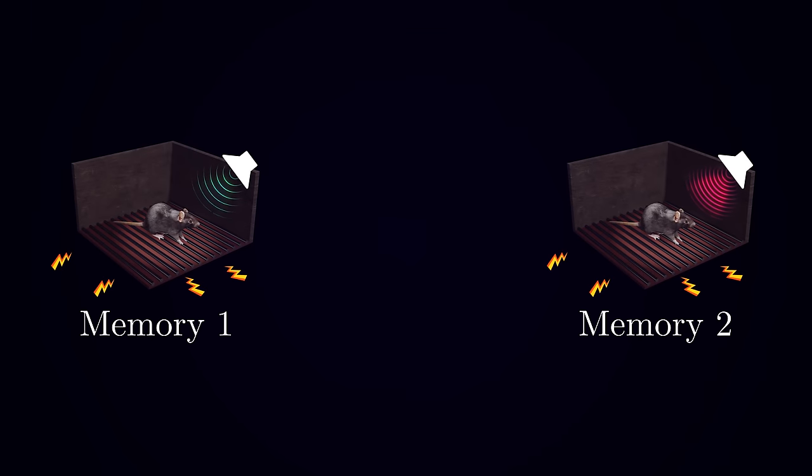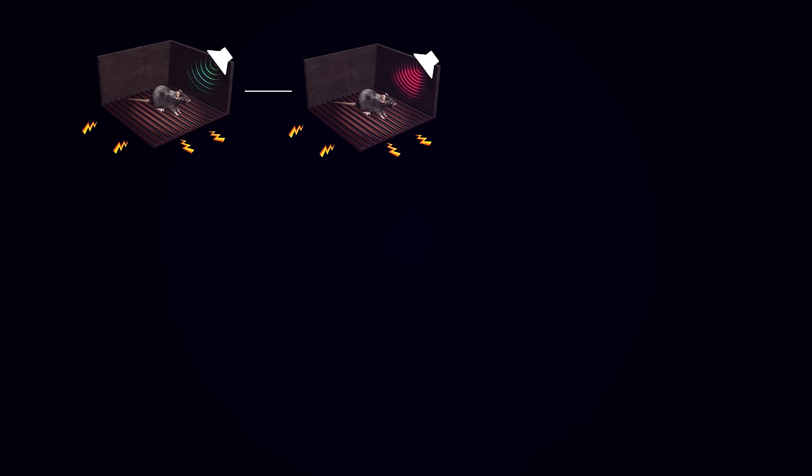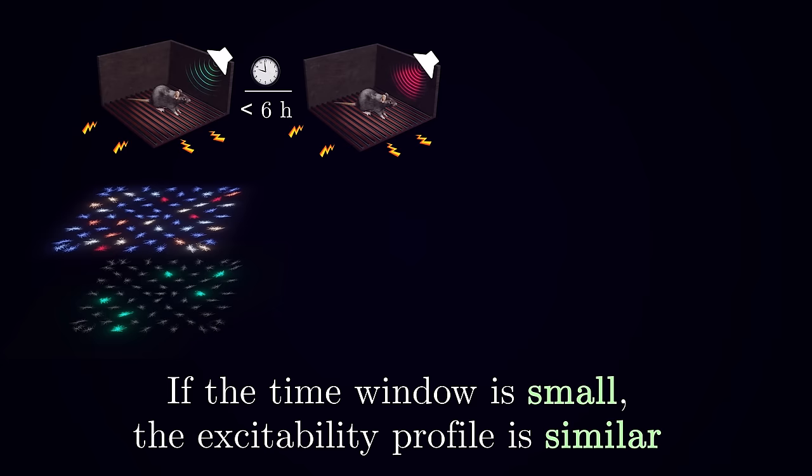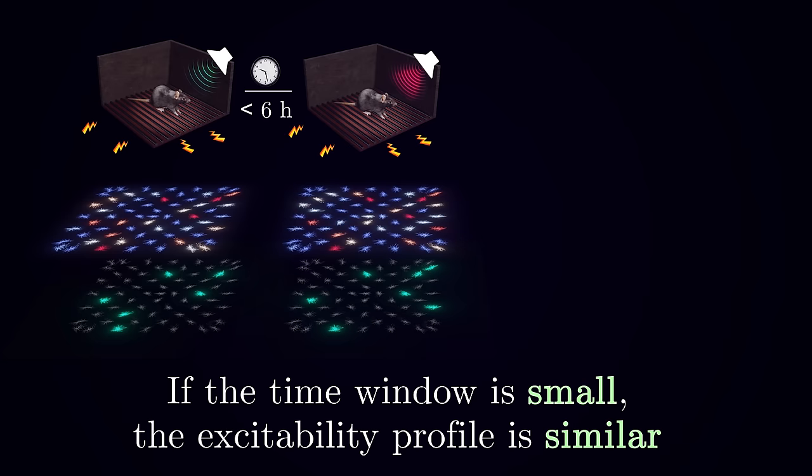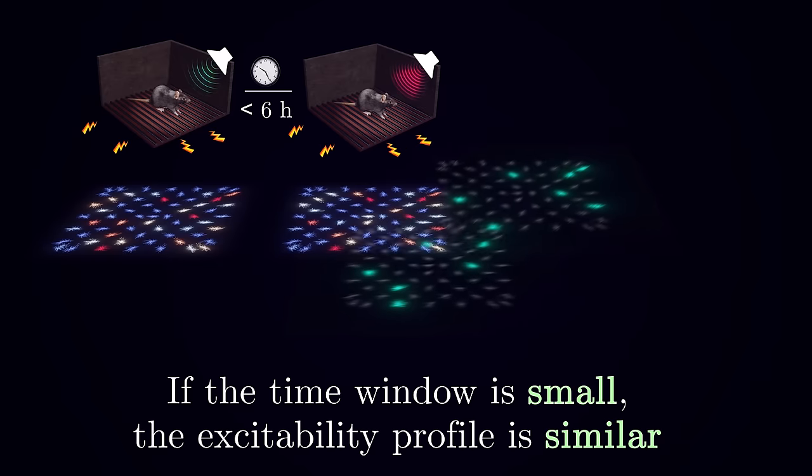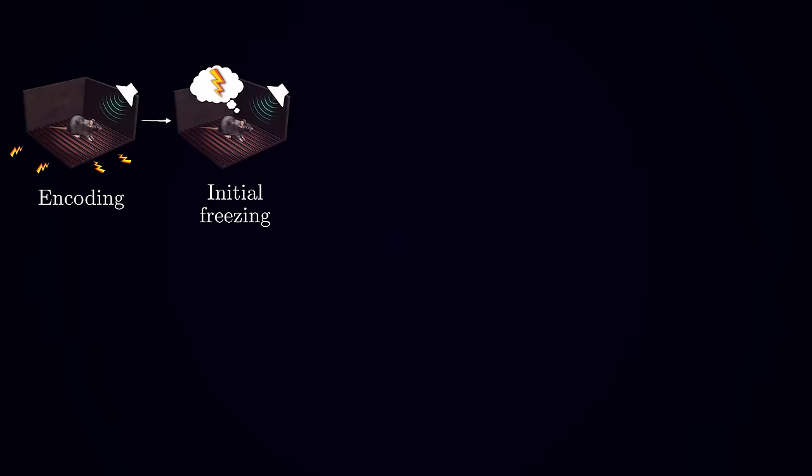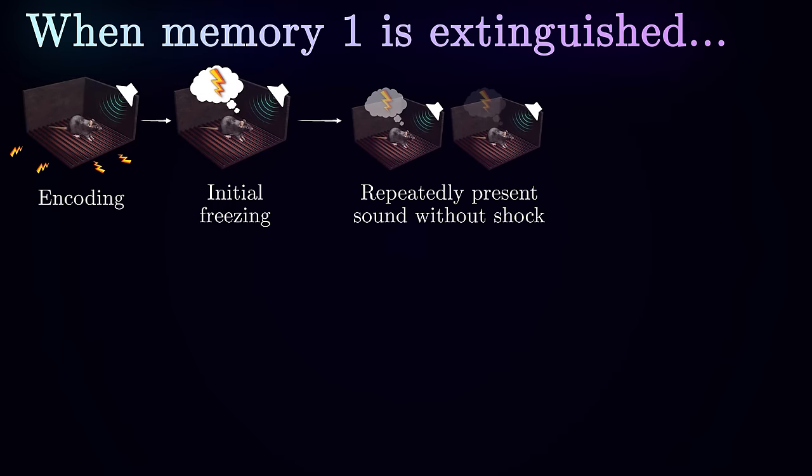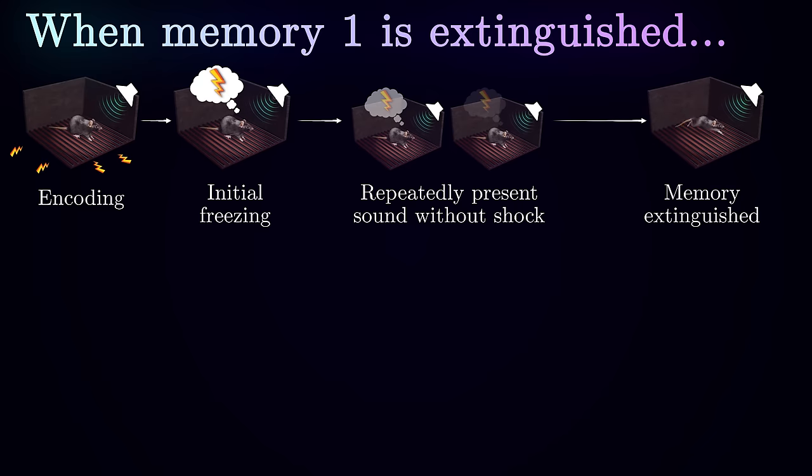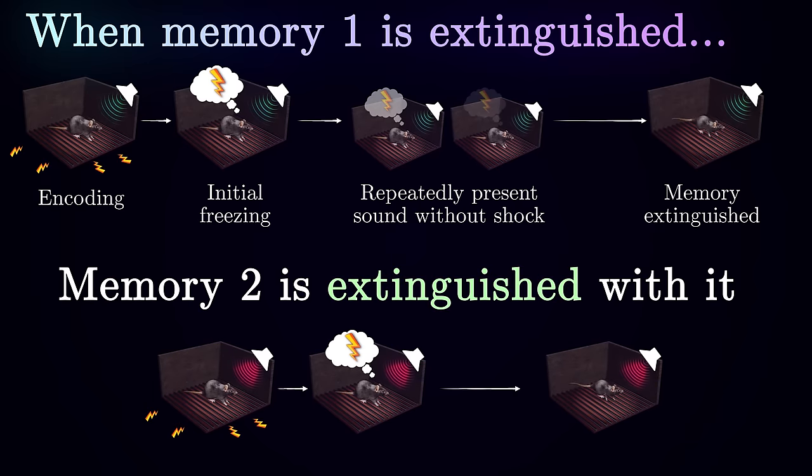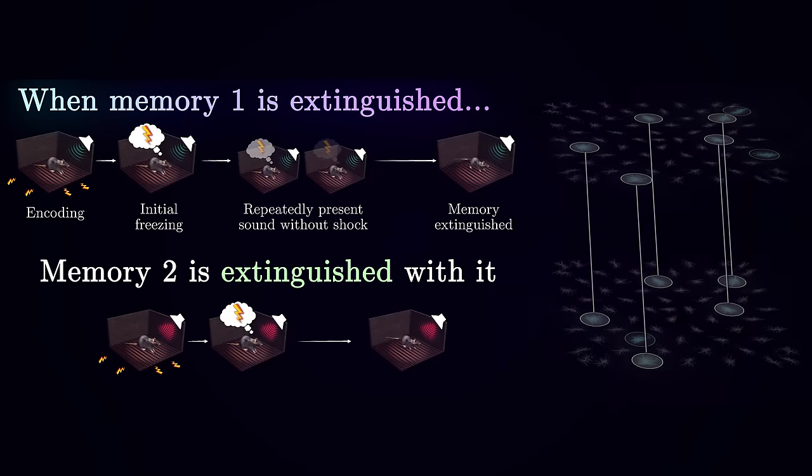For instance, consider the experiment with two different memories being associations between foot shock and two different sound tones. When the two corresponding fear conditioning sessions occur closely in time, with less than six hours in between, neurons that were most excitable during the allocation of the first memory several hours later still retain their elevated levels of excitability, and a large portion of them can outcompete the rest of the population during the allocation of the second experience. As a result, engrams for the two events become overlapping and functionally linked. This means that if you try to extinguish one memory, for example, by presenting sound A without the shock so that the mouse gradually dissociates them and stops freezing in response to the tone A, it will also affect the other memory. And the mouse will show decreased levels of freezing in response to the tone B as well. You can see how the paired memories got extinguished together.